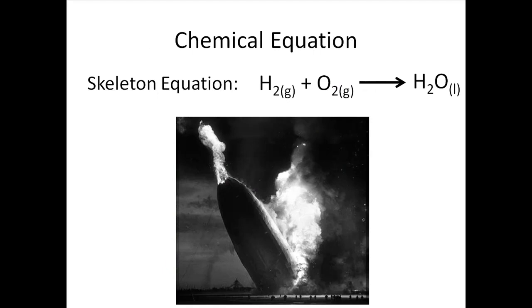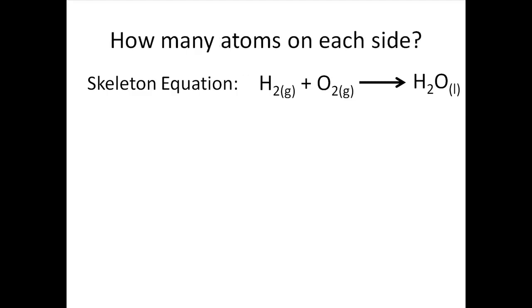Now, if we want to show this reaction as a skeleton equation, we show hydrogen as H2, oxygen as O2, and water as H2O. Don't forget that we represent the state of each reactant as a subscript in the parentheses. H2 is a gas, O2 is a gas, and H2O is a gas at the temperature at which the Hindenburg burned.